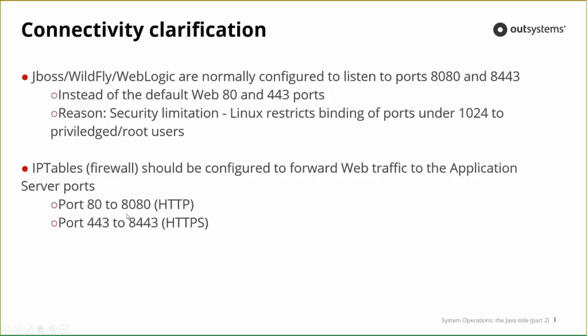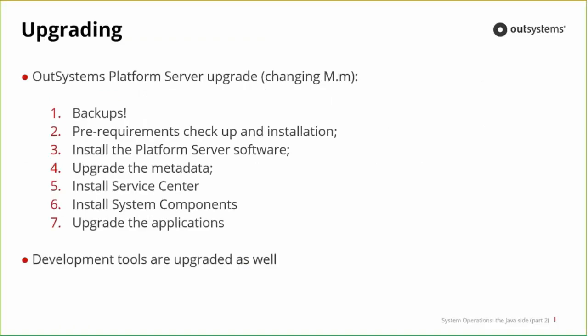Now let's talk about upgrading. Upgrading the platform basically means changing the first two digits — the major and minor version. The first thing you always need is backups. You need to backup everything before you try to do anything. Then you need to go through the pre-requirements checklist and validate if everything is okay. If not, install whatever needs to be installed — for example, if a new version requires a new application server like a new JBoss version.